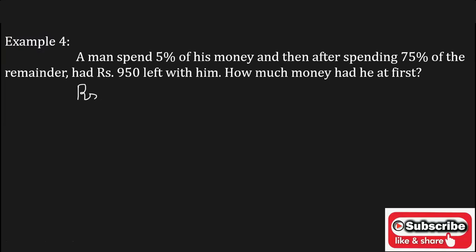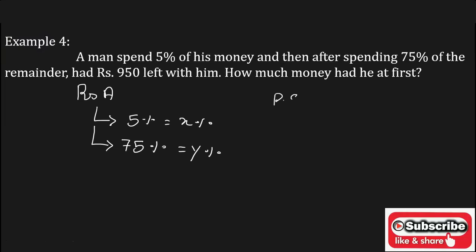Suppose Rs. A is the amount which a man had. First he spends 5% of his amount — that is X percent — and again from the remaining amount he spends 75% — that is Y percent — and he is left with Rs. 950, which is the present amount. We have to calculate how much money he had at first, that is the initial amount.